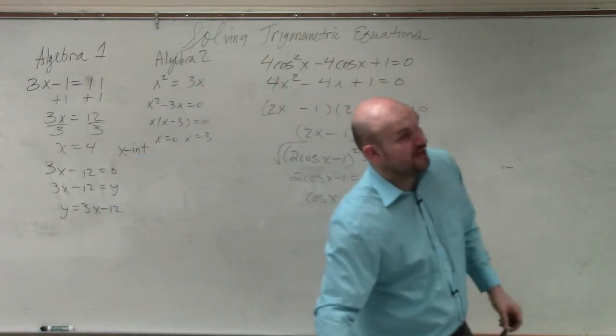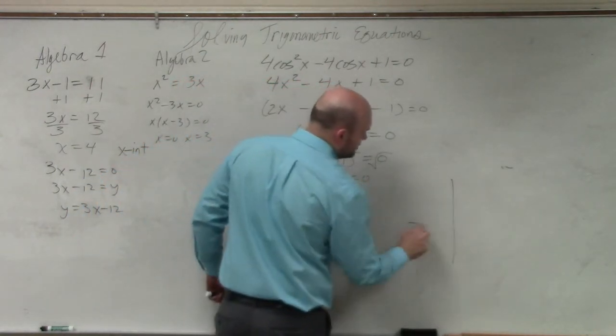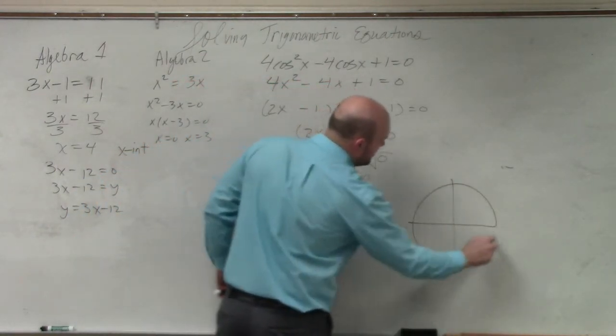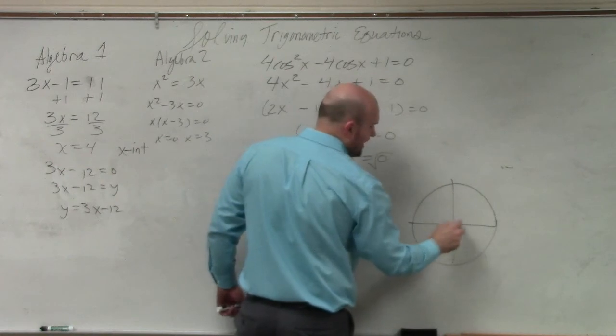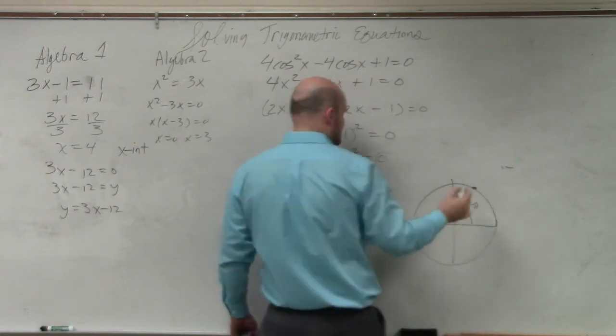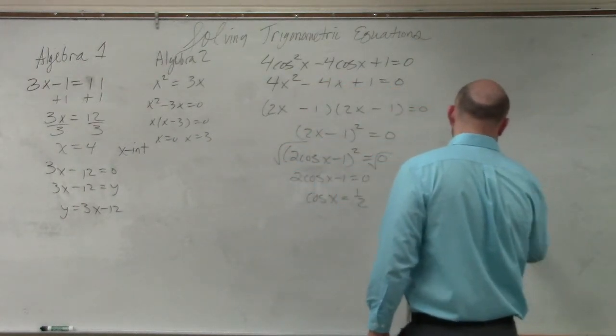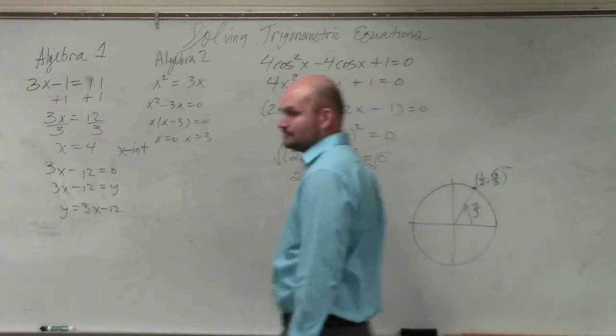So now, we need to figure out, well, what are the values when cosine of x is equal to 1 half? So we go to our lovely unit circle, and we say, all right, well, in the first quadrant, cosine is equal to 1 half at the angle pi over 3.